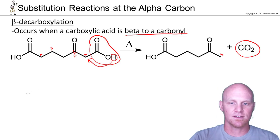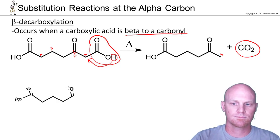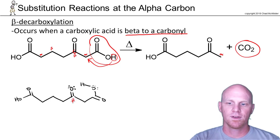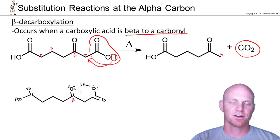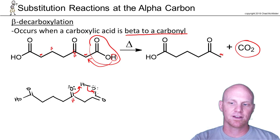To understand why this is, let's redraw this molecule and rotate around this bond. We can see that when we have a carbonyl at the beta position, it is in the perfect position to deprotonate the hydrogen of the carboxylic acid, and that's what governs whether this reaction happens or not. Deprotonating that hydrogen frees up electrons to form another double bond.